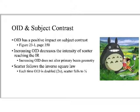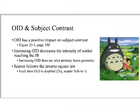The scatter is flying out in all different angles. If we increase the distance, some of that scatter is not going to reach the image receptor — we're allowing the scatter to miss its target by increasing that object-to-image receptor distance. So we can say an increased OID has a positive impact on subject contrast. Another way of saying this: increasing the OID decreases the intensity of scatter reaching the image receptor — meaning fewer photons got there because we increased that distance.